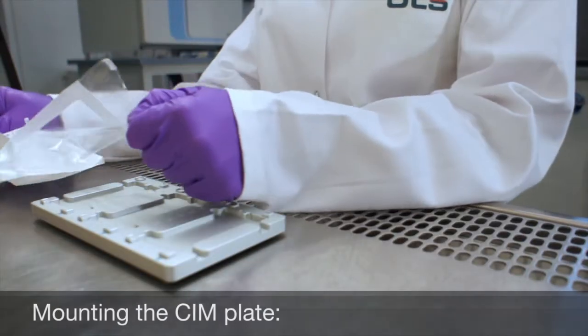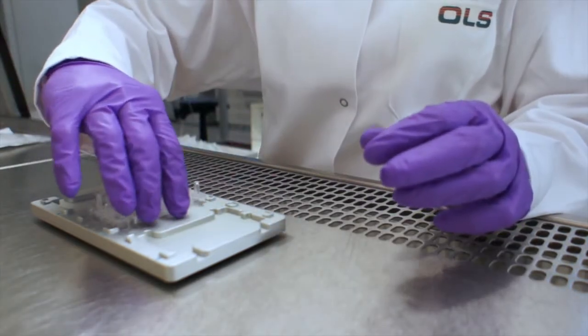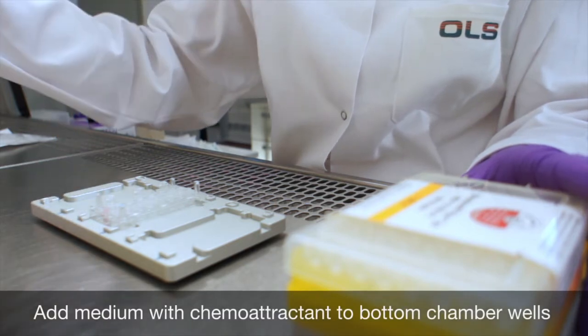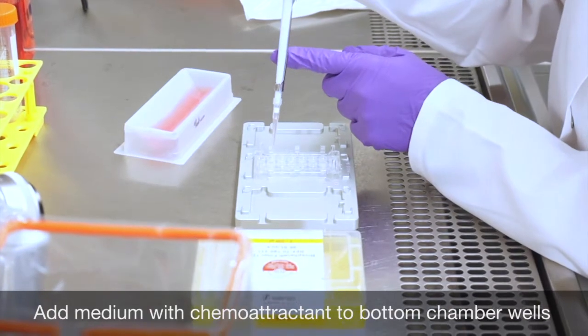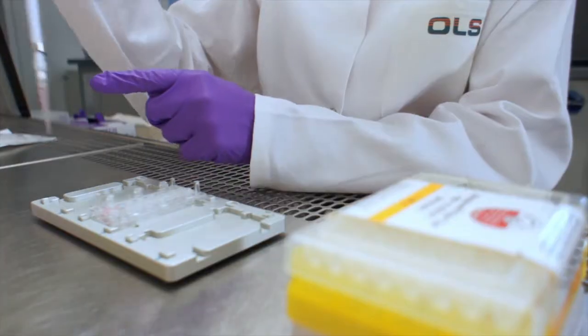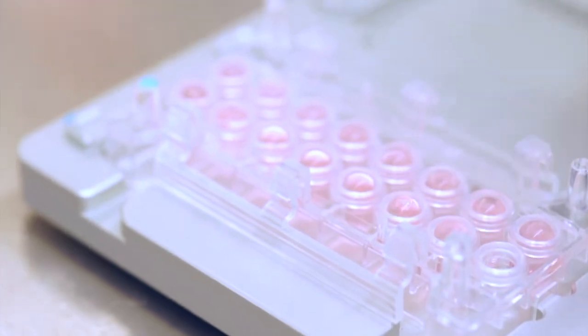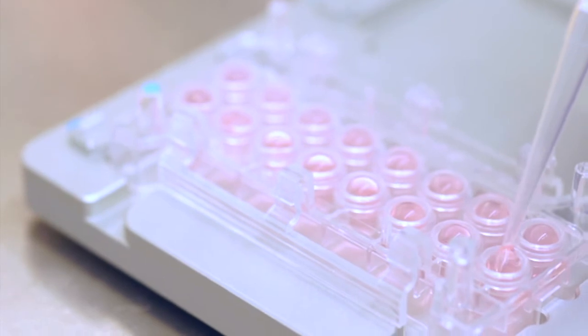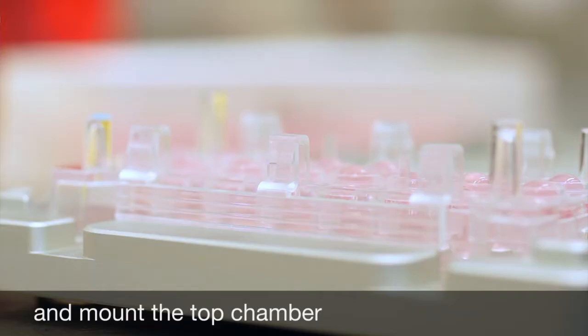To assemble the CIM-Plate, place the lower chamber on the assembly module and add medium containing the chemoattractant in each well. The liquid dome observed will ensure a proper seal without bubbles between the two chambers. Mount the upper chamber onto the lower chamber.